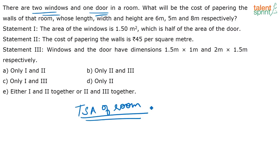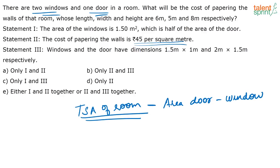To find how much paper is required, take the total surface area of the room and subtract the area of the door and the windows, because we will not put paper on those. Now for the cost: whenever you are papering a room, the cost of the paper will always be per square meter. Here the cost of papering is 45 rupees per square meter. So for every square meter they charge you 45 rupees. We omit the doors and windows while finding the total area to paper.